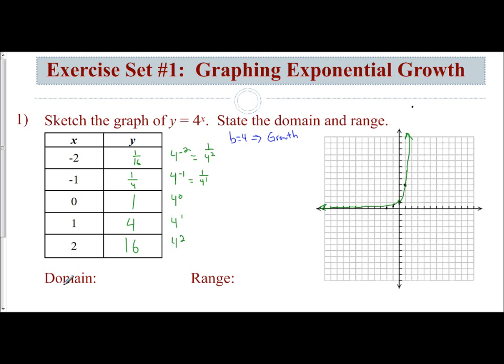My domain is all real numbers. That's a gimme. When dealing with exponential functions, your x values are all real numbers. Your range describes the y. Here, our graph will never cross the x-axis. It will never cross the equation y equals 0. So y has to be greater than 0, all the positive numbers. And so that's an exponential growth.